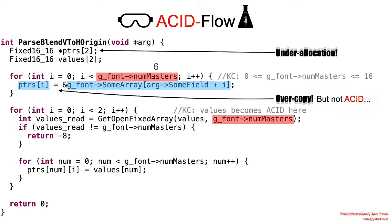In the subsequent flow, getOpenFixedArray serves to initialize the values array with the objects in g_font.